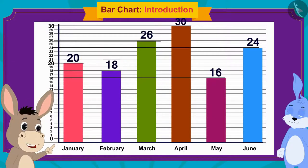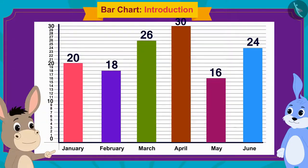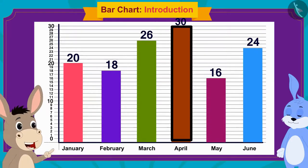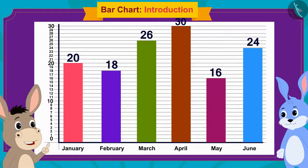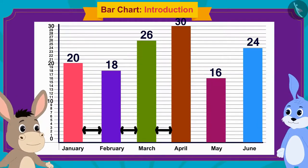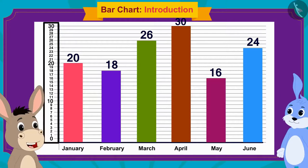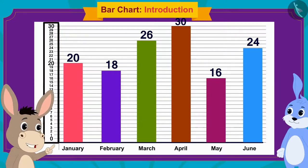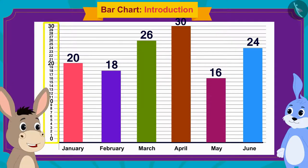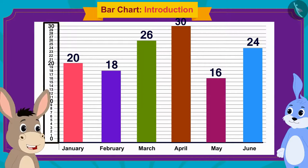Bholla explained the completed bar chart: the height of each bar shows the amount saved in that month. The bars are rectangles of exactly the same width, and the space between them is also equal. On the vertical line, equally spaced numbers from 1 to 30 show the amounts saved, and on the horizontal line are the names of the months.